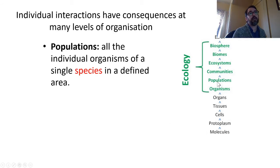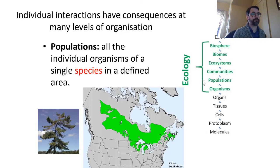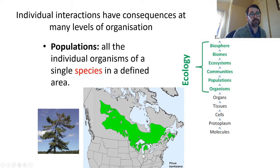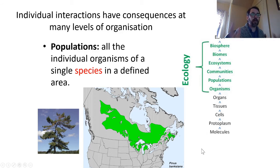Moving up above organisms, populations are the next level of organization — basically all the individual organisms of a single species in a defined area. For example, jack pine (Pinus banksiana) is a tree species found mostly in Canada, with its southernmost range in the Indiana sand dunes. You can see its range across North America including Indiana, so the population of jack pine is within that green area.